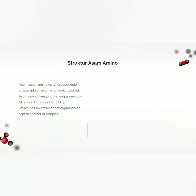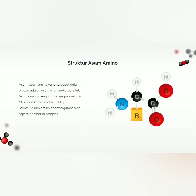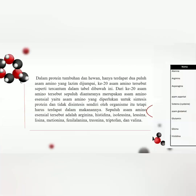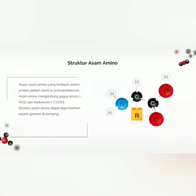Selanjutnya, struktur asam amino. Asam-asam amino yang terdapat dalam protein adalah asam alfa-aminokarboksilat. Secara umum, atom C ini mengikat 4 gugus: gugus pertama yaitu gugus amina, yang kedua gugus karboksilat, yang ketiga atom hidrogen, dan yang keempat gugus sisa atau rantai samping (R).